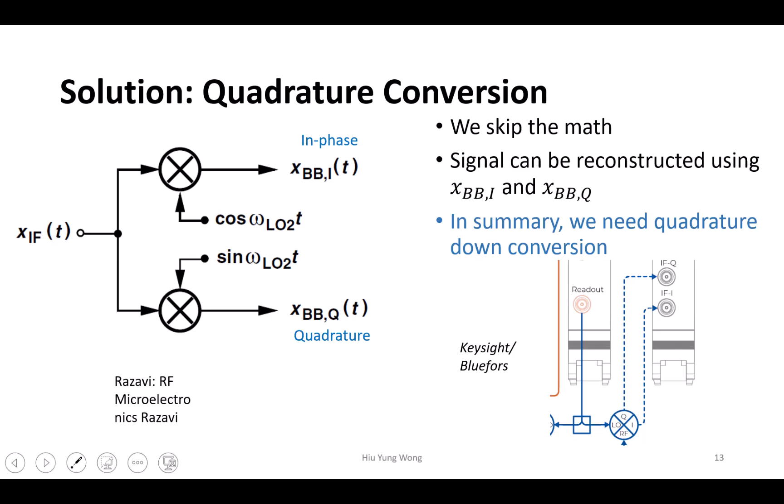A lot important actually for this class, and the reason is that then people come up with something called quadrature conversion, which is used a lot in quantum computing. What it does—because I have this signal—I actually mix it with two out-of-phase signals. One is sine omega L, another is cosine omega L. So they are out of phase by 90 degrees. Then you will get these two signals. One is called in-phase, one is called quadrature phase. We don't go through the math. The point is that then you will have a better signal integrity.